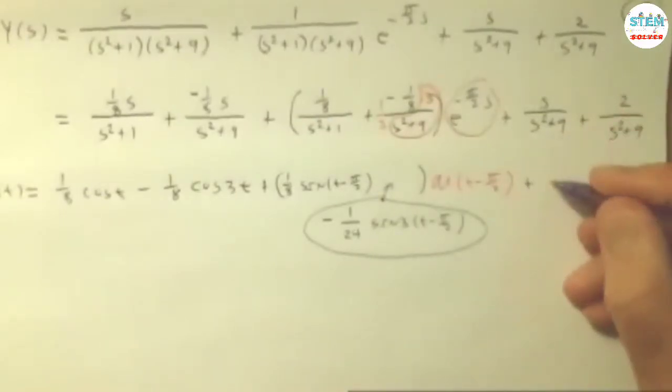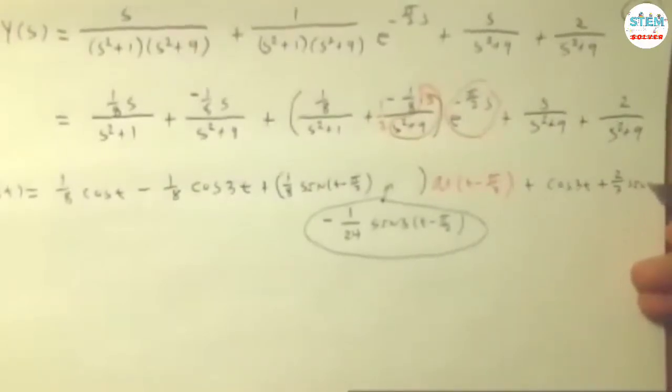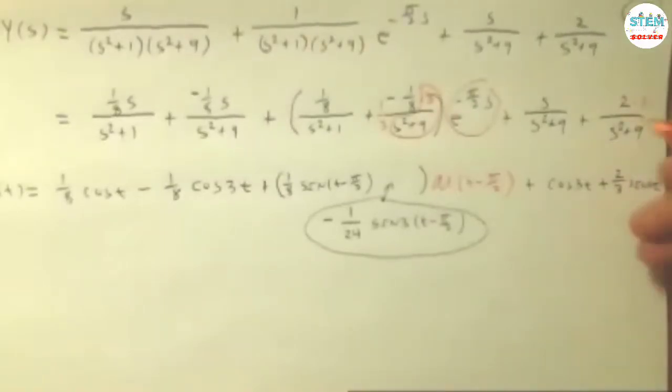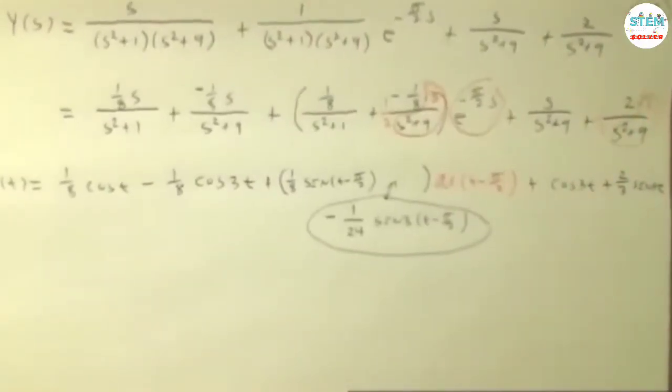And then the last two of these are easy. It's just cosine of 3t. And this would turn out to be two-thirds sine of 3t. So then you have three here and three here. And this one right here.